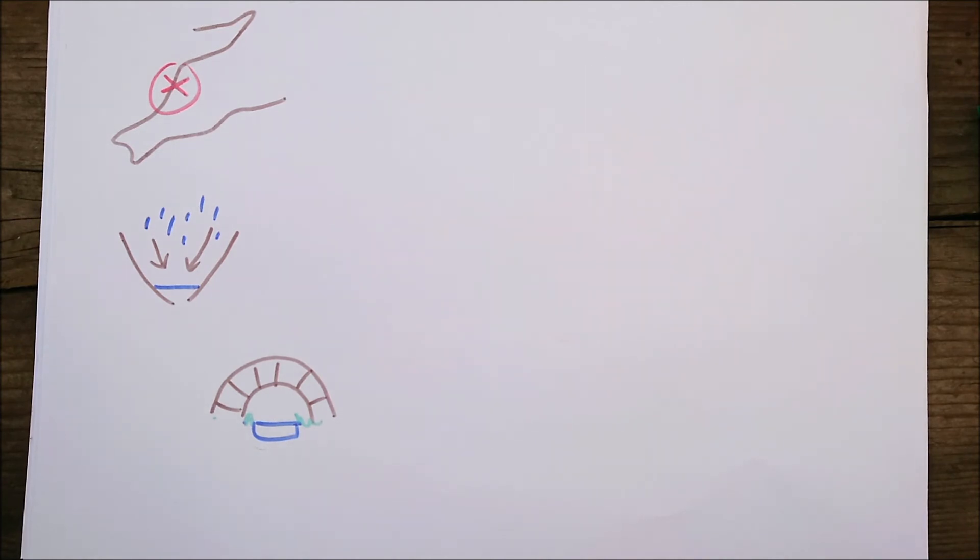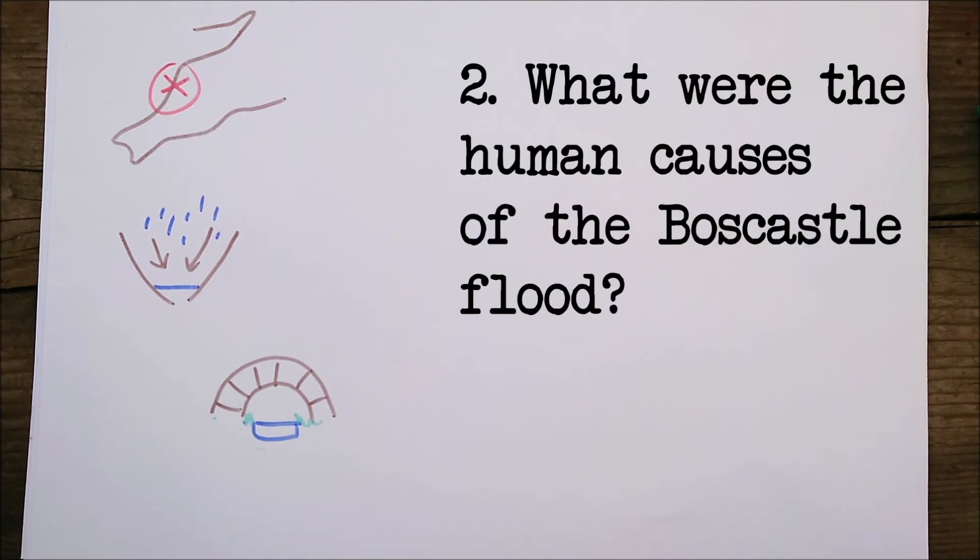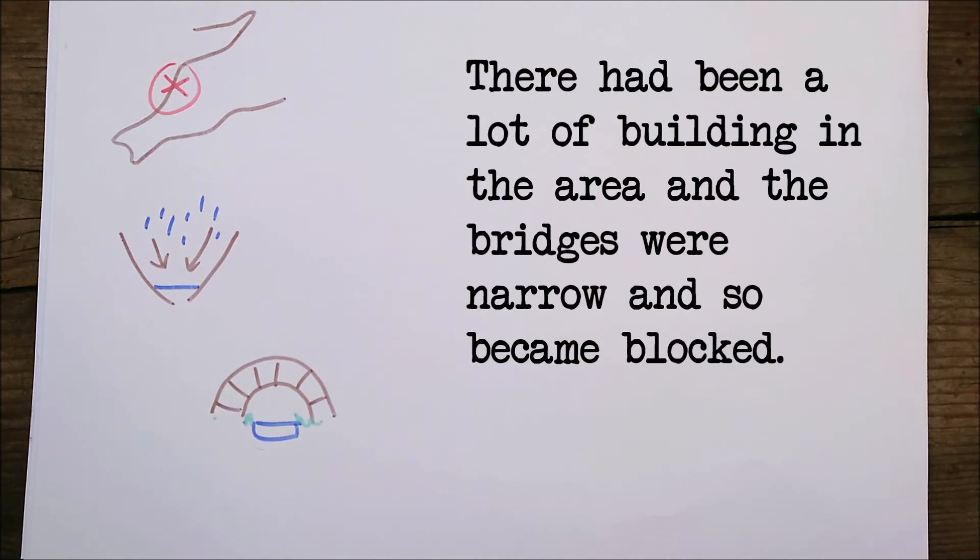Two. What were the human causes of the Boscastle flood? There had been a lot of building on the floodplain, which created a lot of impermeable surfaces. And a lot of the bridges that crossed the river were quite narrow underneath, which meant that they got blocked easily.